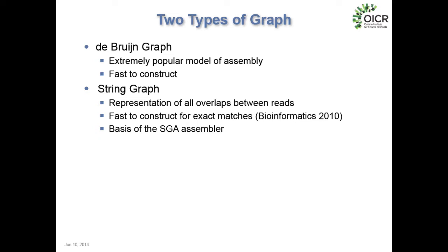If you read assembly papers or look at assembly software, you'll hear about two different types of assembly graphs. There's the extremely popular De Bruijn graph model, where you take each sequence read, break it into a set of sub-sequences called k-mers, and construct a graph of these k-mer sequences. This is by far the most popular way of performing assembly on next-generation sequencing data, because constructing these graphs — breaking reads into k-mers and finding k-minus-1 overlaps — is extremely fast. We can do this in linear time, so it scales well for large volumes of data.